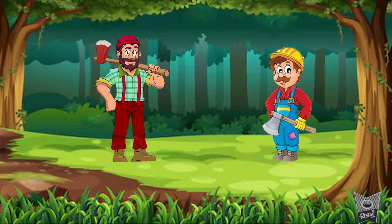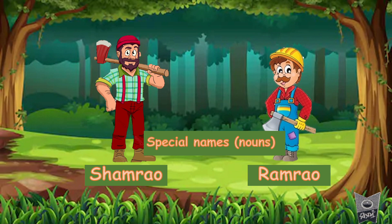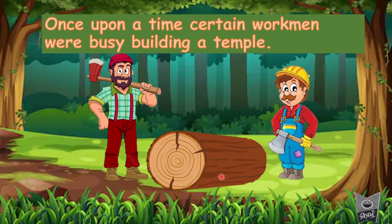The Monkey and the Log is a story of two workmen. The names of the workmen are Ram Rao and Sham Rao. These are special names of persons, so look at the spelling — S in Sham Rao and R in Ram Rao are written in capital letters because they are proper nouns.